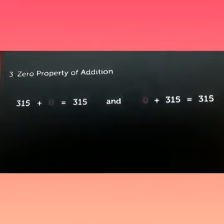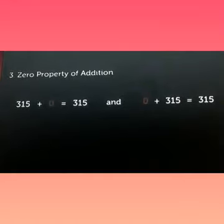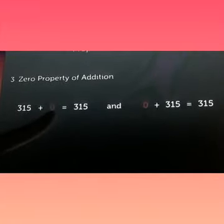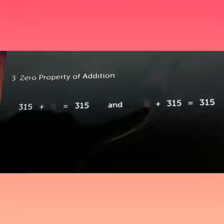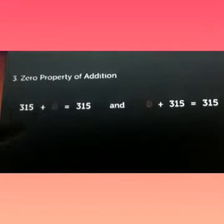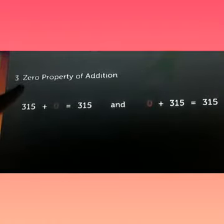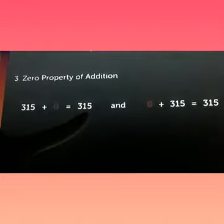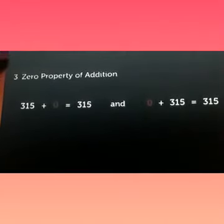The third property is zero property of addition, also known as additive property of zero, which says that if we add zero to any number, we get the same number. For example, I have taken 315 here. If I am adding zero to it, I am getting the same answer, 315. Zero plus 315 equals 315. In both cases, if zero is added, we get the same number. This is the zero property of addition. Please remember it is also known as additive property of zero.